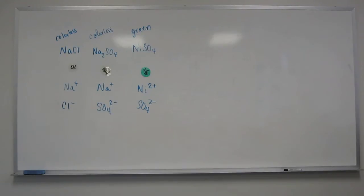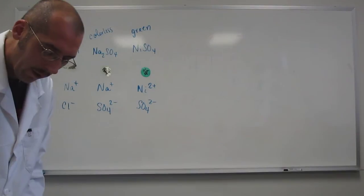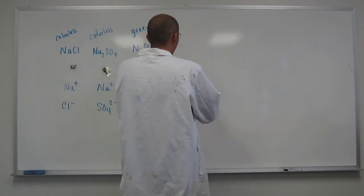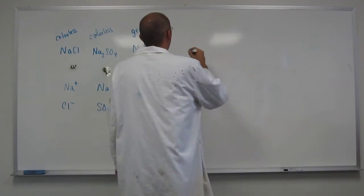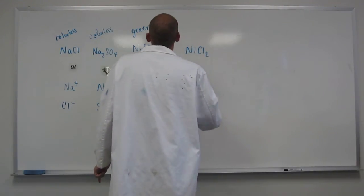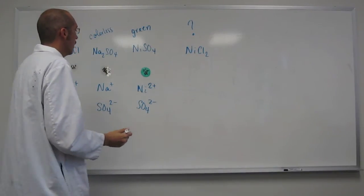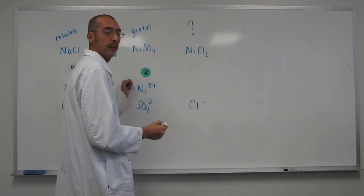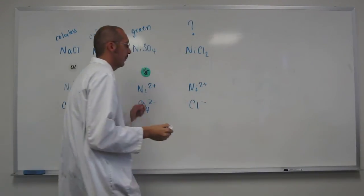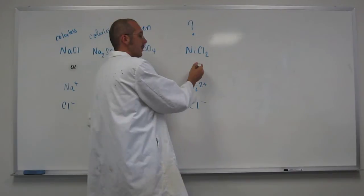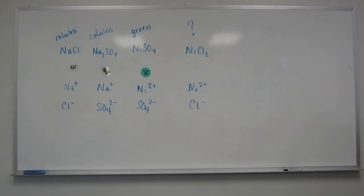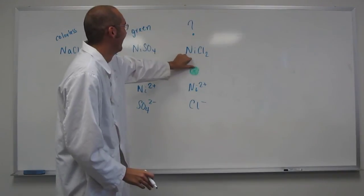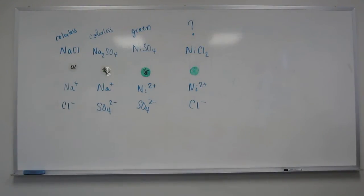Let's finish this problem off. We've got our last compound here. It asks us: what is the color of nickel(II) chloride, NiCl2? So we know the Cl⁻ is colorless, right? But the nickel(II) plus — what color did we figure that out to be? Green. So we would expect this compound to be green. And when we put it up, clearly it's green — clearly from my cutouts of these things.